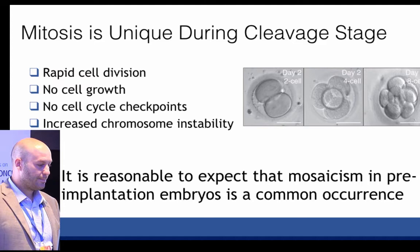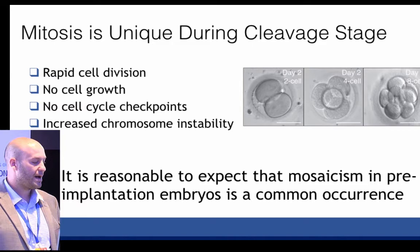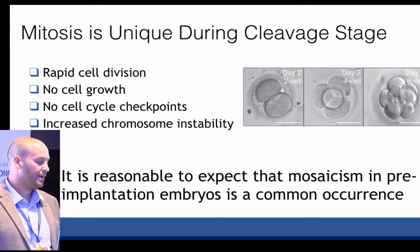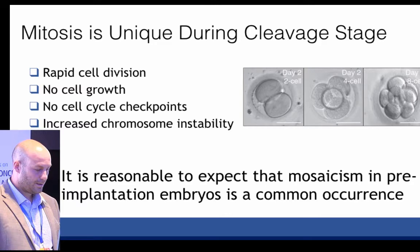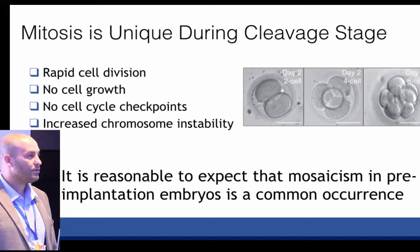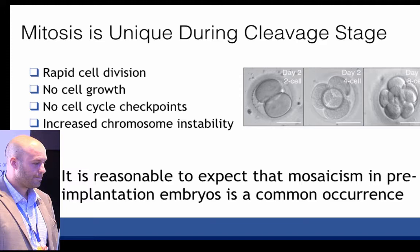So why do we see mosaicism so often in pre-implantation embryos? Mitosis is unique during the cleavage stage of these embryos. You are undergoing very rapid cell division because you have even partitioning of the cytoplasm in those cells, so you don't have cell growth occurring during this time point. You also have very lax cell cycle checkpoints that you would normally have in later stages of development during mitosis, and you also have increased chromosome instability. Based on all of this, it's really reasonable to expect that mosaicism in pre-implantation embryos is actually a very common occurrence.